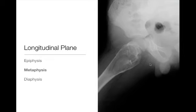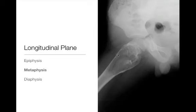Next up is the metaphysis. Here we have a geographic lytic lesion, non-sclerotic border, narrow zone of transition, centered in the metaphysis and somewhat into the diaphysis of the proximal femur. This is a child, so we have a nice distinction of the epiphysis, the unfused growth plate, and the metaphyseal lesion itself. This one has a fracture through it — a pathological fracture with a fallen fragment — which is classic and pathognomonic for a unicameral or solitary bone cyst.